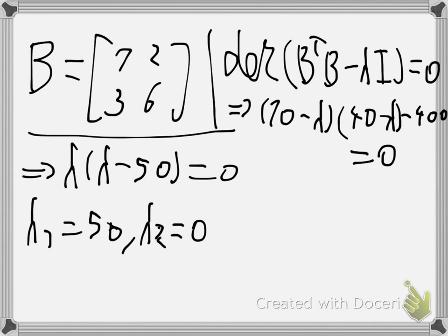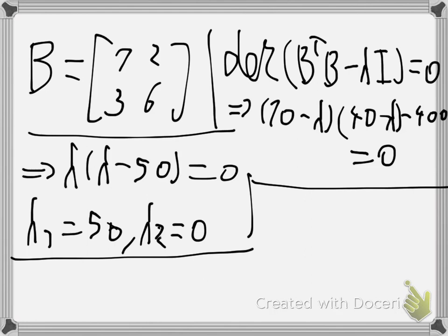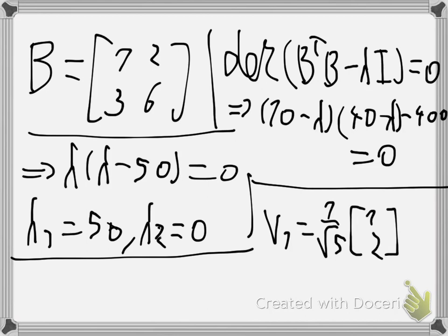Since I chose B transpose B, I can find the vectors of V, not U. Finding the eigenvectors of B transpose B gives the vectors of matrix V. I find that v1 is equal to 1 over square root of 5 times [1, 2], and v2 is equal to 1 over square root of 5 times [-2, 1].